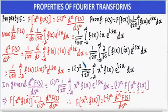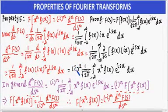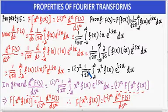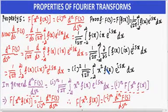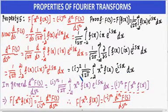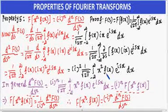Now, taking the term i² outside the bracket, it becomes i² · (1/√(2π)) · ∫ from -∞ to +∞ of x² · f(x) · e^(isx) dx. So for the second-order differentiation, we have arrived at this result.